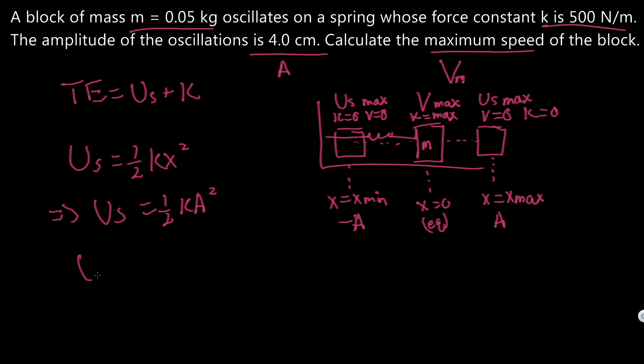We actually know what it is because it's four centimeters. U_s equals one half k, which was given as 500 newtons per meter, times the amplitude, which is 0.04 meters. Let's just calculate it: 0.5 times 500 times 0.04 squared. We got the potential energy of the spring to be 0.4 joules.